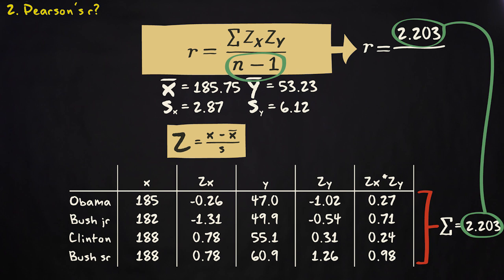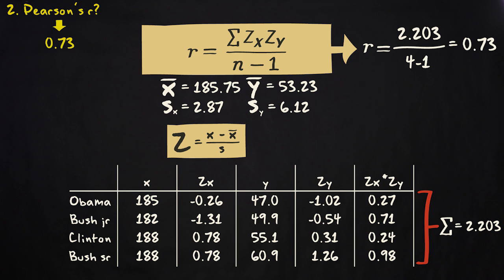Finally, we have to divide by n minus 1. The n is 4, so n minus 1 equals 4 minus 1 is 3. The result rounded up is 0.73. That's Pearson's r. It indicates that there is a rather strong and positive linear correlation between a leader's body height and his average approval rating.